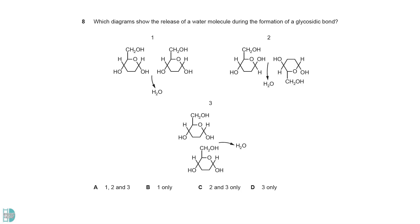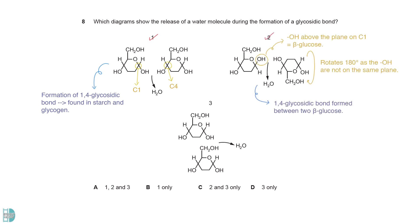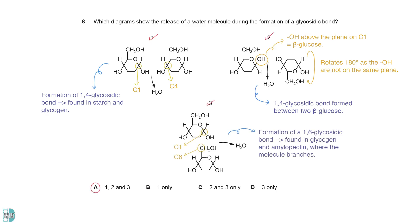1 is possible — it shows the formation of a 1,4-glycosidic bond, which is found in starch and glycogen. 2 is also a 1,4-glycosidic bond, but it occurs between 2 beta-glucose molecules. The second molecule rotates 180 degrees as the OH groups are not on the same plane. Figure 3 shows the formation of a 1,6-glycosidic bond. It is found in glycogen and amylopectin, where the molecule branches.